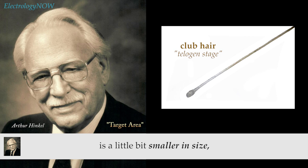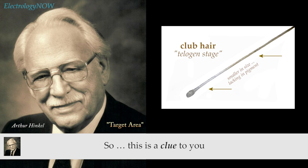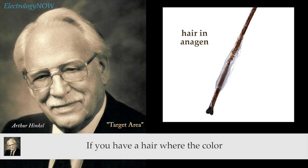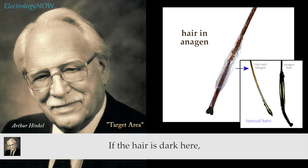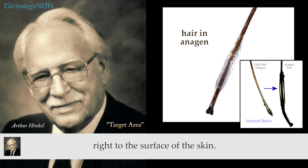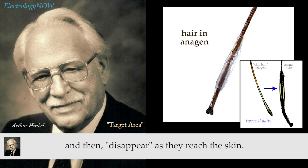You also have a situation where the hair is a little bit smaller in size and lacking in pigment. This is a clue when you insert — if you see a lack of color at the surface of the skin, you are pretty well sure of inserting into a club hair. If you have a hair where the color goes right down to the surface of the skin, nice and dark and the same width all the way, that hair is an anagen hair. When trying to find an anagen hair for your depth guide, pick the ones that are dark right to the surface of the skin.